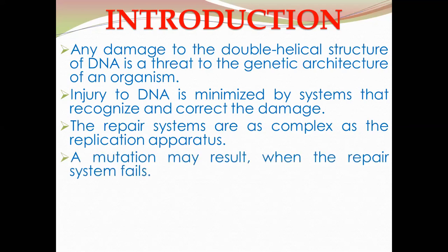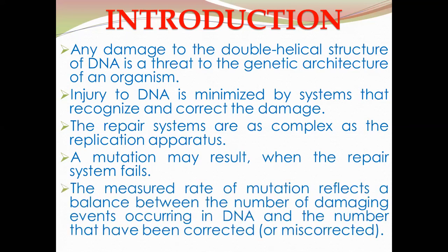A mutation may result when the repair system fails. The repair system first tries to overcome the damage to the DNA and repair it. But if the DNA repair system fails, the result is mutation — modification in the genetic material. The measured rate of mutation reflects a balance between the number of damage events occurring in DNA and the number that have been corrected or miscorrected.